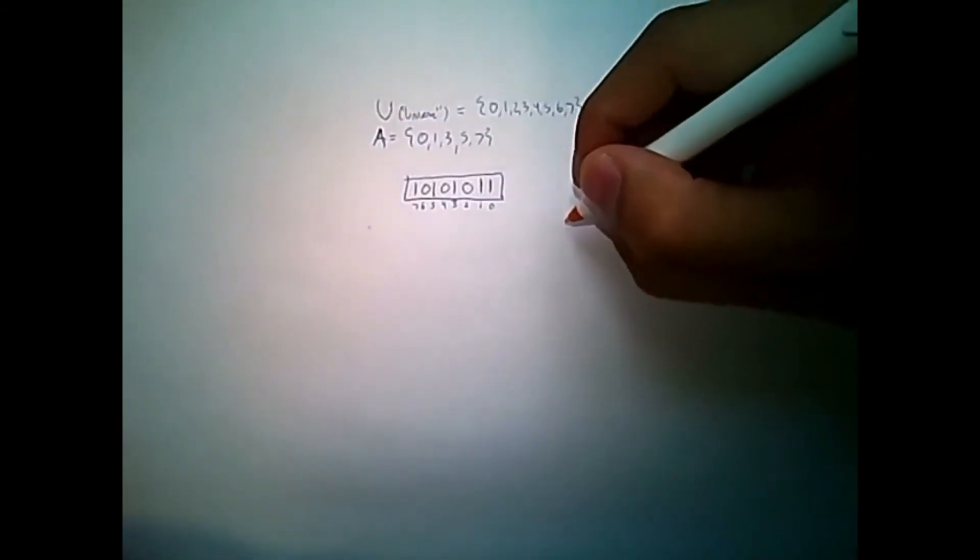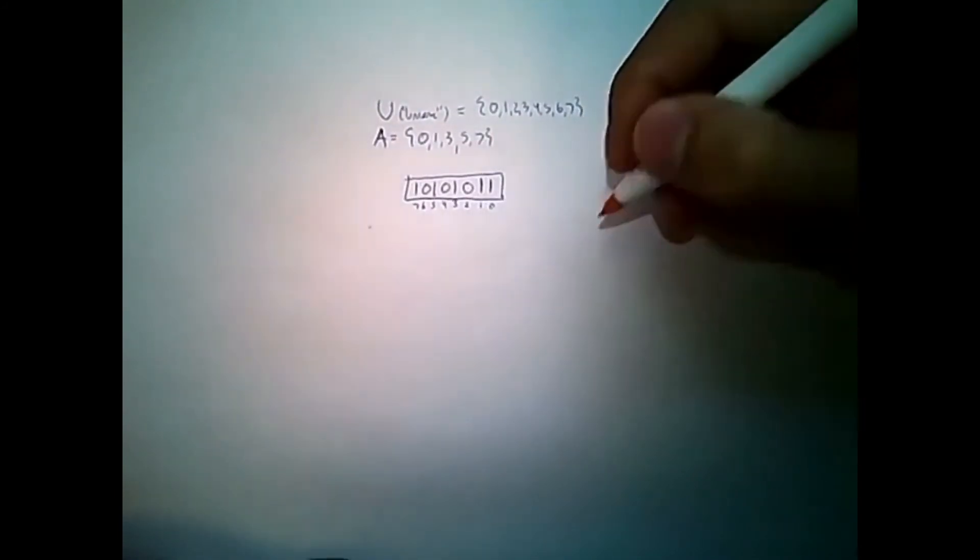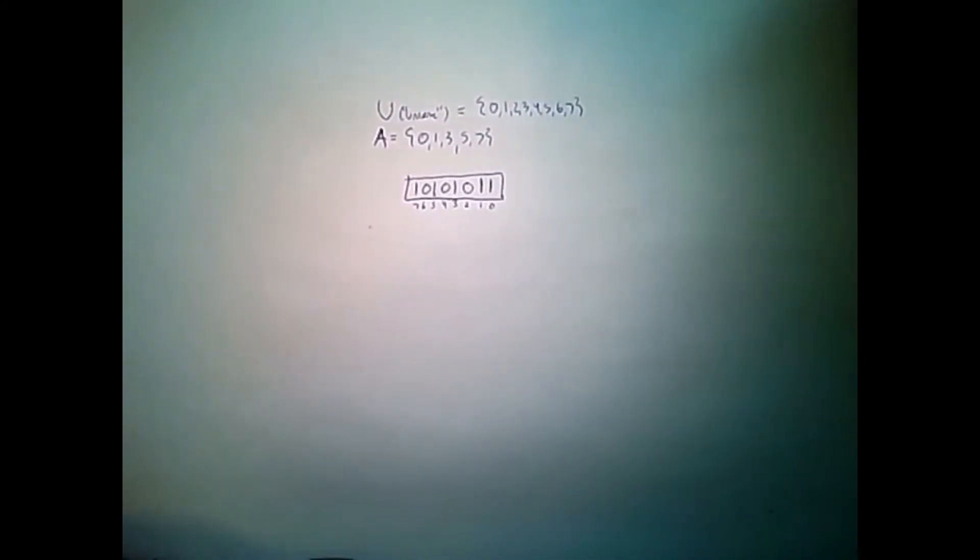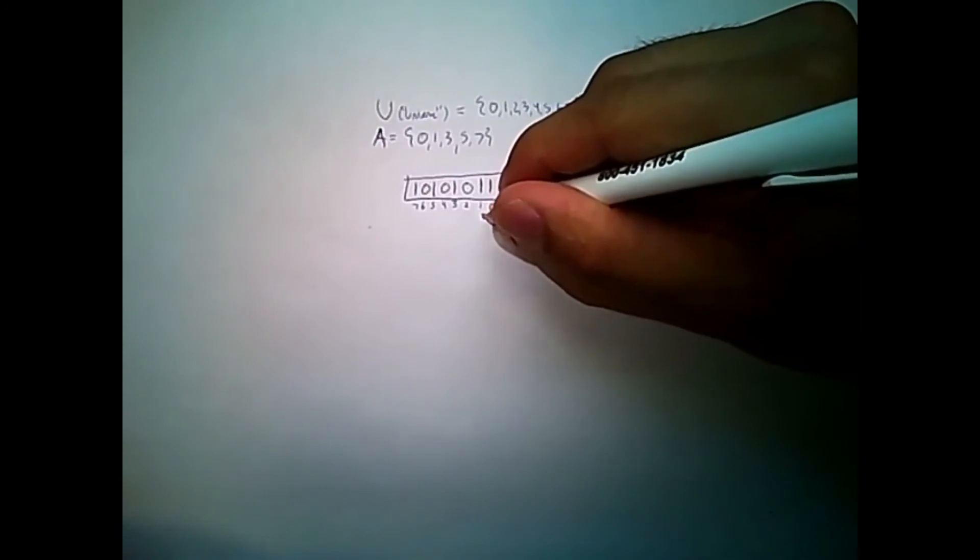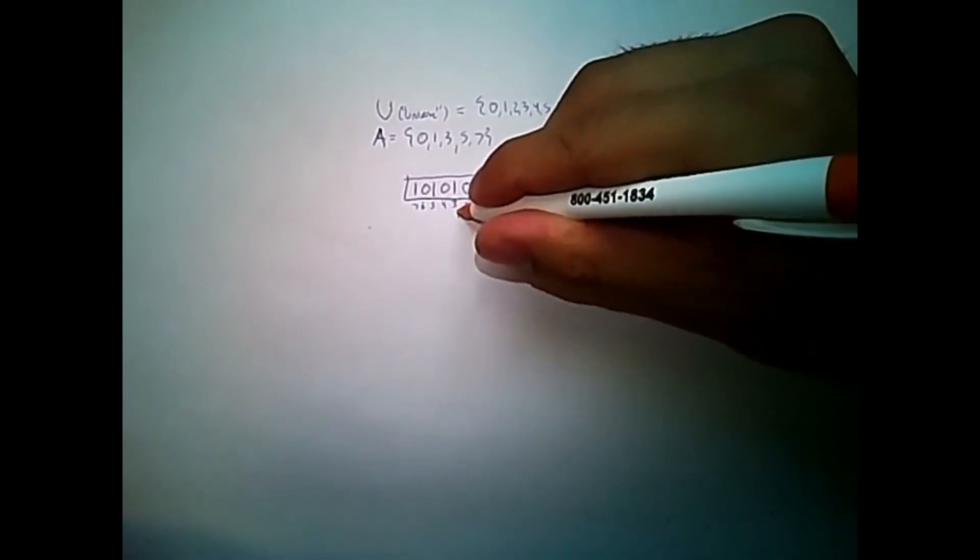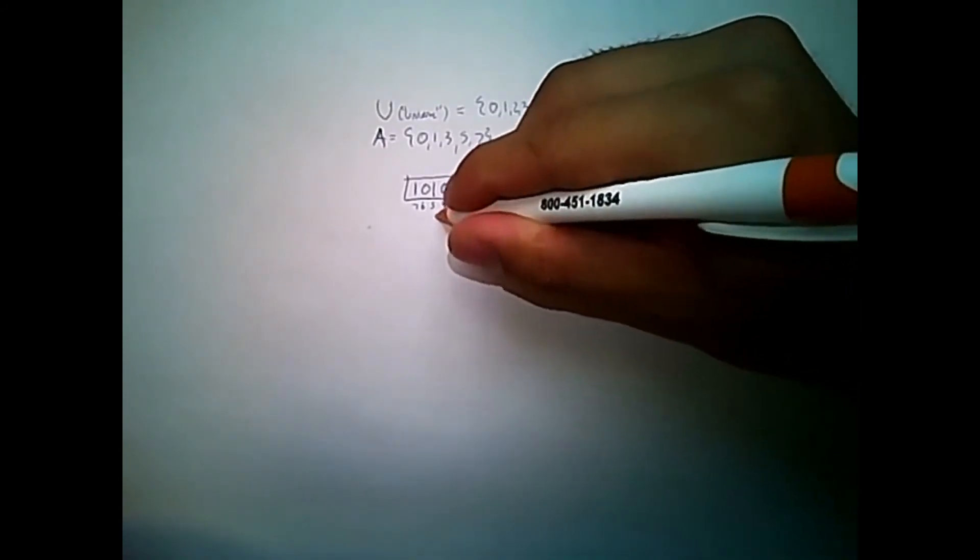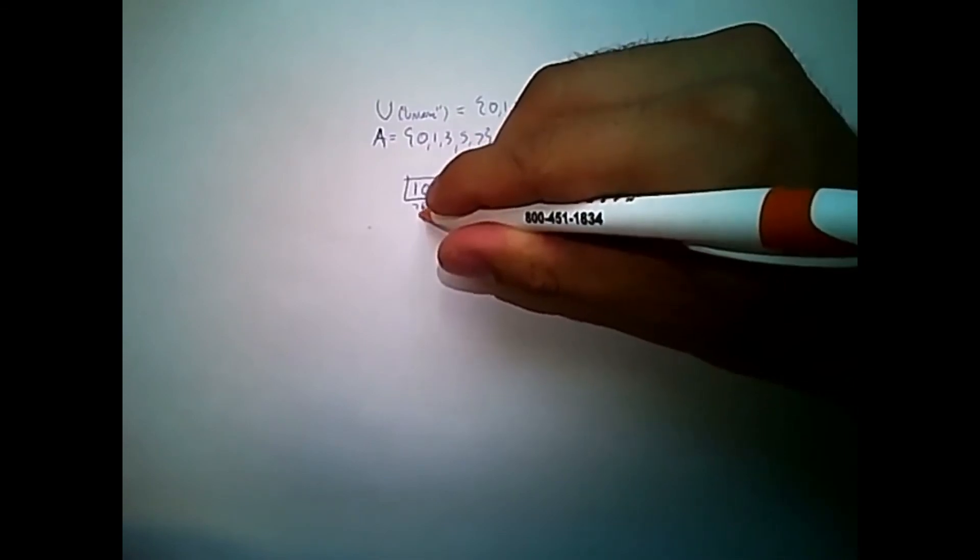So this is a representation that might come in handy as opposed to using some other data structure that might take up more memory. If I can just get away with using one of these bits and making it a 1 if it's in the set or a 0 if it's not in the set, this is very efficient. So you might see this representation somewhere along your career.